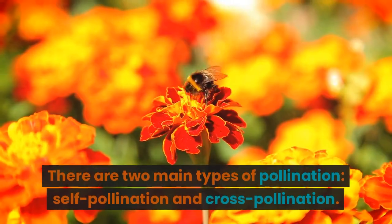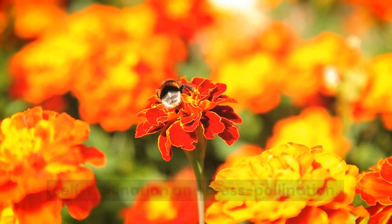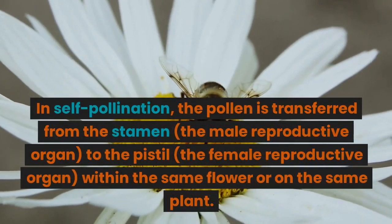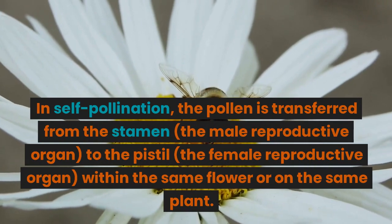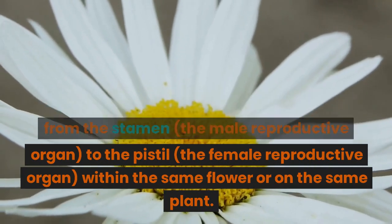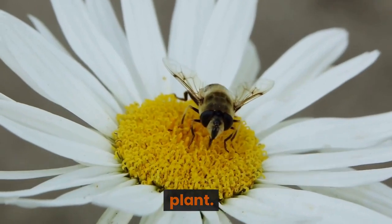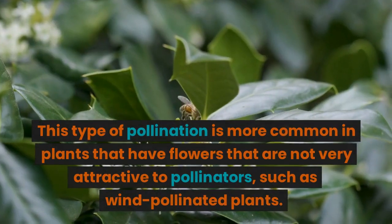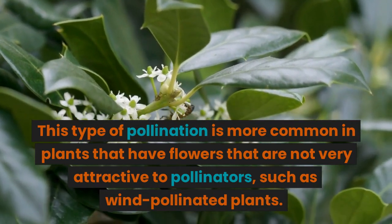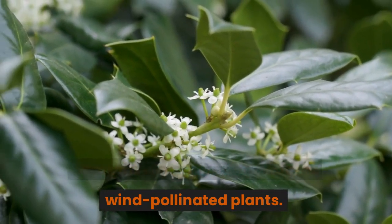There are two main types of pollination: self-pollination and cross-pollination. In self-pollination, the pollen is transferred from the stamen, the male reproductive organ, to the pistil, the female reproductive organ, within the same flower or on the same plant. This type of pollination is more common in plants that have flowers that are not very attractive to pollinators, such as wind-pollinated plants.